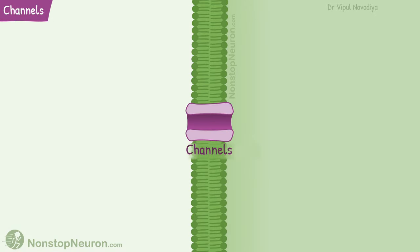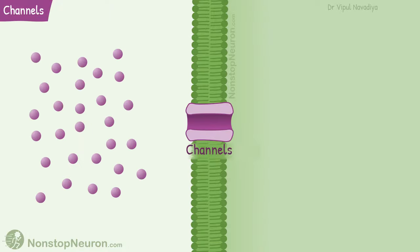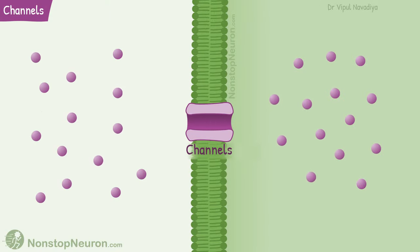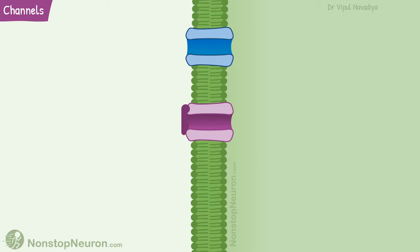Now let's see channels. They simply provide continuous passage through the membrane, just like a tunnel. Ions can freely diffuse through this passage. Thus, movement through channels is passive, down the electrochemical gradient. Channels are often selective for a particular type of ion.